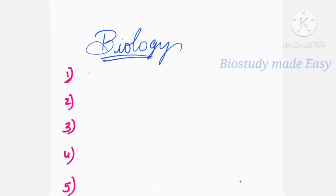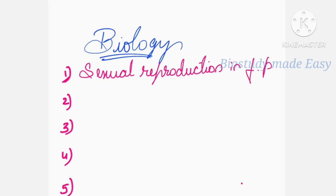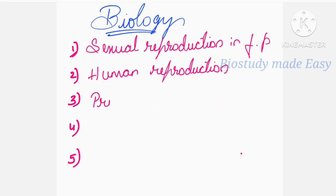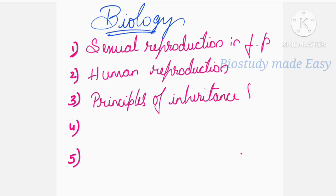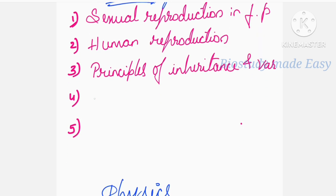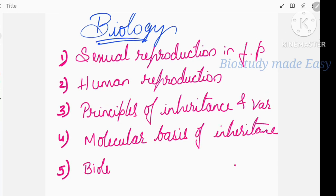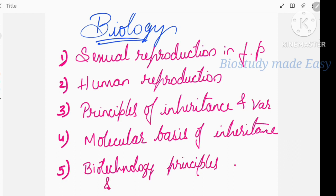For Biology, the important chapters are: first, Sexual Reproduction in Flowering Plants; second, Human Reproduction; third, Principles of Inheritance and Variation; and fourth, Molecular Basis of Inheritance.